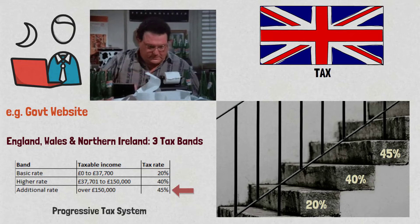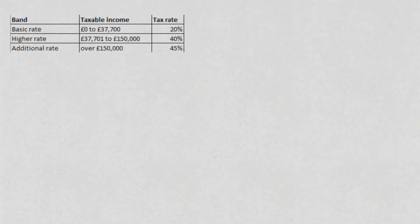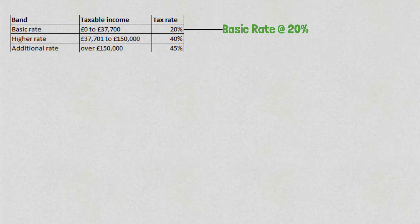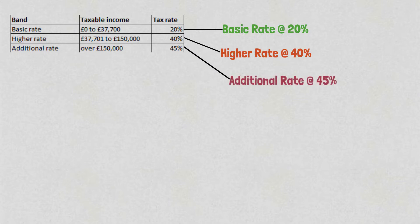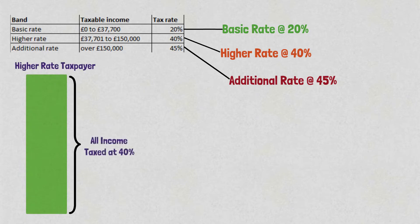In reality it can be a little different, but let's stay on topic and leave that debate for another video. For the first tax band, income is taxed at 20% — this is known as the basic rate. Income in the second tax band is taxed at 40%, whereas any income falling in the third tax band is taxed at 45%. A common mistake here is to think that if your total income falls in a band then that rate applies to all of your income, but that's not true.